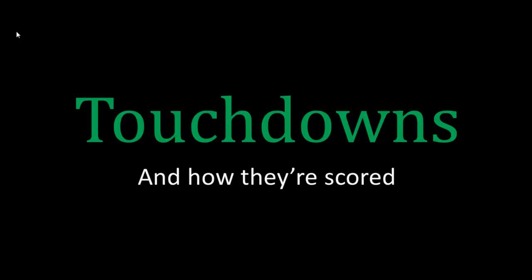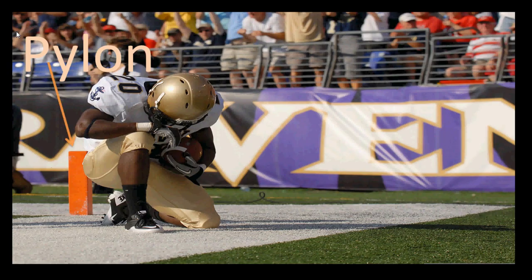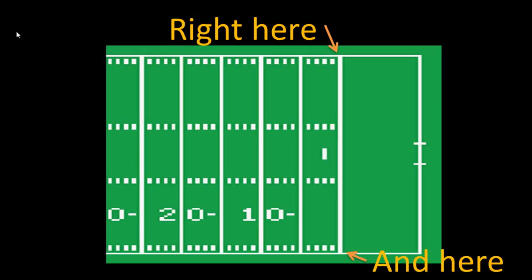Before I start, I want to define one thing quickly because it is mentioned a lot in the upcoming rules, and that is a pylon. The pylon is this orange thing that sticks up out of the ground. It sits at the intersection of the goal line and the sideline, and as you will see in a moment, it is considered to be inbounds. The pylon is there to help the referees determine whether or not a ball is in the end zone.